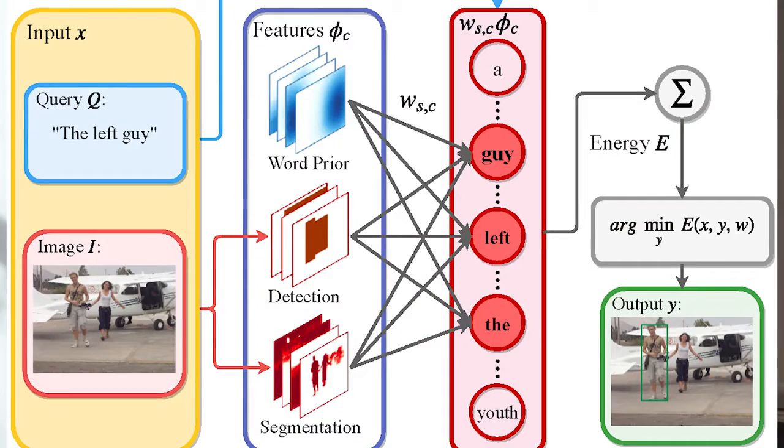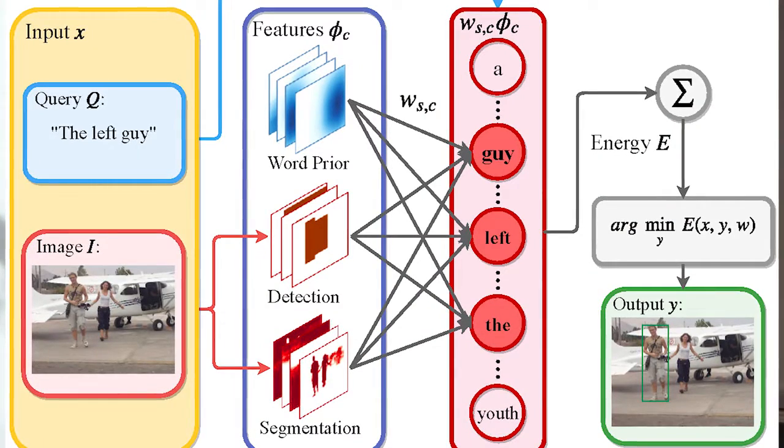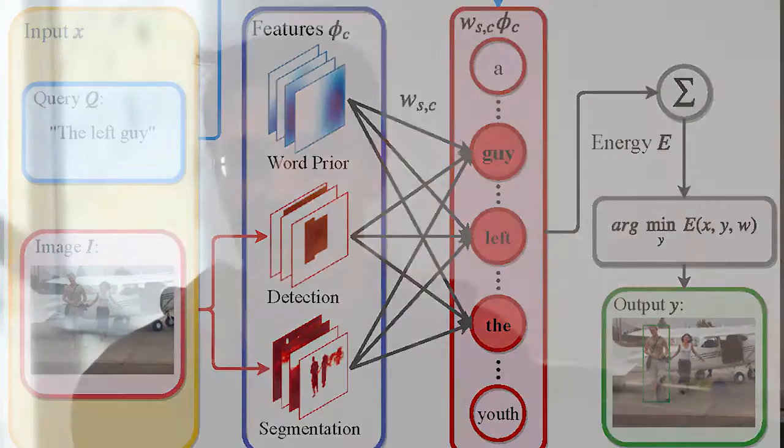In this work, we demonstrate that we can cast the problem of textual grounding into a unified framework that permits efficient search over all possible bounding boxes. Hence the method is able to consider significantly more proposals and doesn't rely on a successful first-stage hypothesizing bounding box proposals.